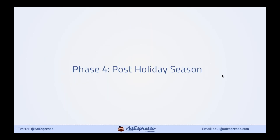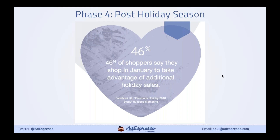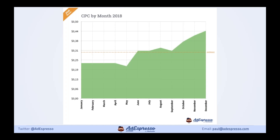Phase four — post-holiday season — is my favorite time. This is when I put significant ad spend in but when people really overlook it. According to Facebook data, 46% of shoppers say they take advantage of post-holiday sales in January. The reason I love it so much is we've been battling with high ad pricing for three months in Q4, and then in January it's super cheap. This is why gyms and holidays are promoted so heavily on Facebook in Q1 — they wait until ad prices drop and avoid competing with holiday retailers.